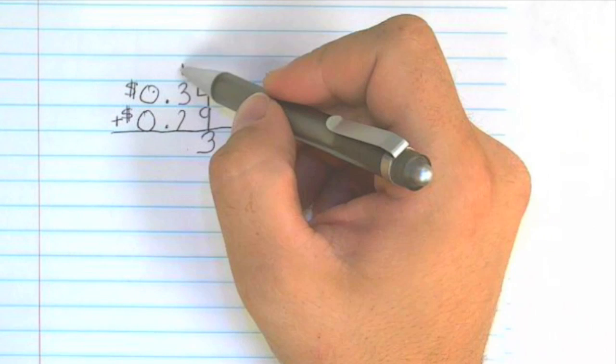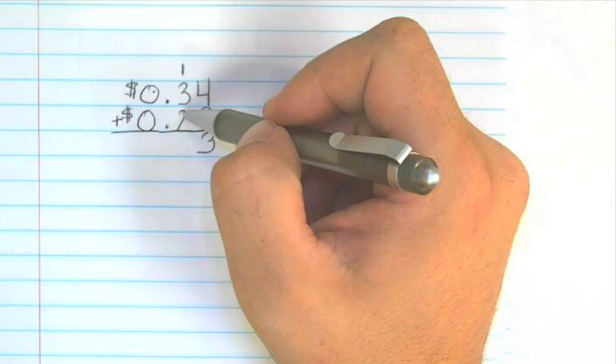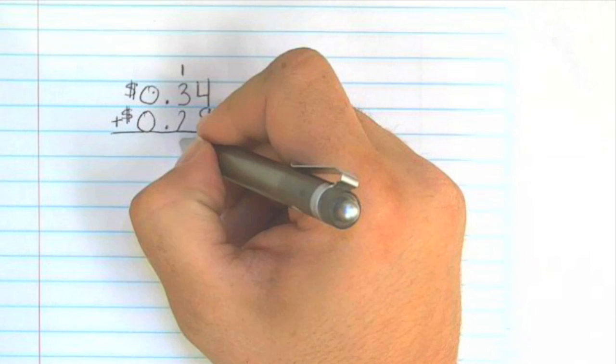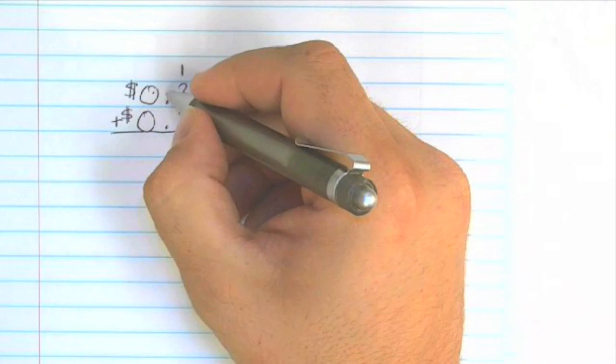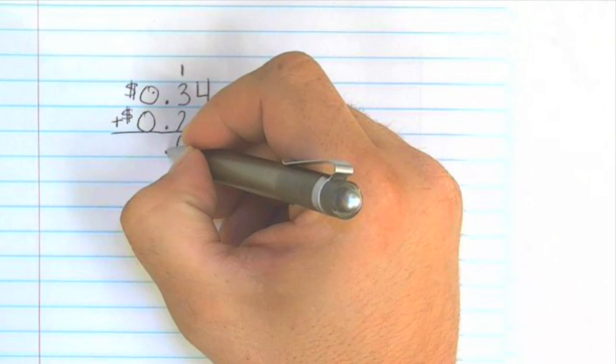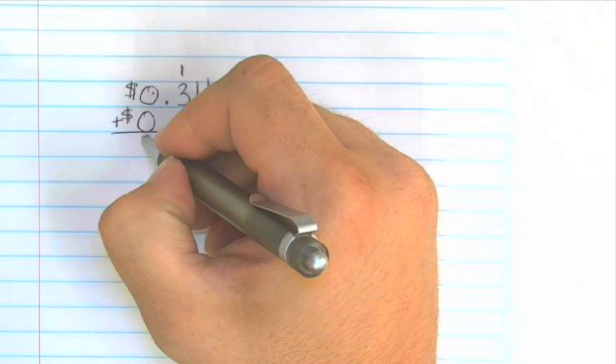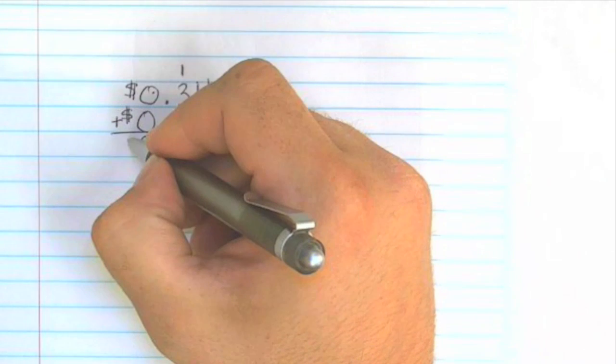Now we have 1 plus 3, which is 4, 4 plus 2 is 6. Drop down the decimal point, drop down the 0, 0 plus 0 is 0, and drop down the dollar sign.